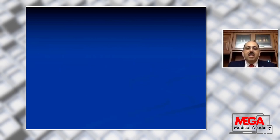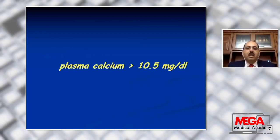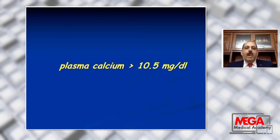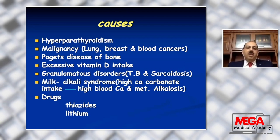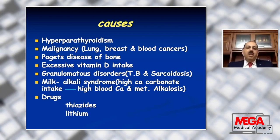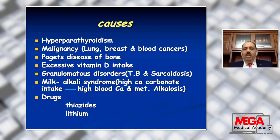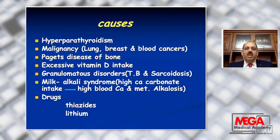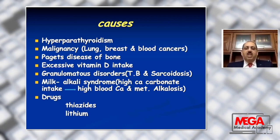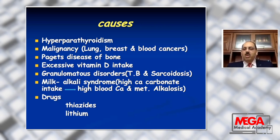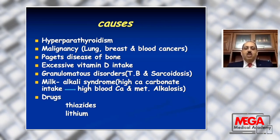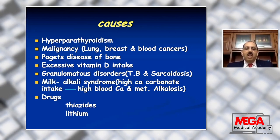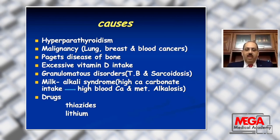Hypercalcemia means plasma calcium above 10.5 milligram per deciliter. Causes include hyperparathyroidism, either primary or secondary, or in cases of malignancy — lung, breast, and blood cancers associated with increased calcium level. Paget's disease of the bone, excessive vitamin D intake, granulomatous disorders such as sarcoidosis, milk-alkali syndrome with high calcium carbonate intake resulting in high blood calcium and metabolic alkalosis, and drugs such as thiazides and lithium.